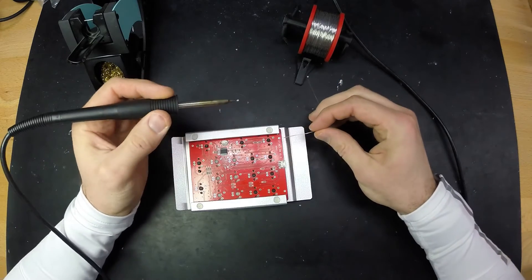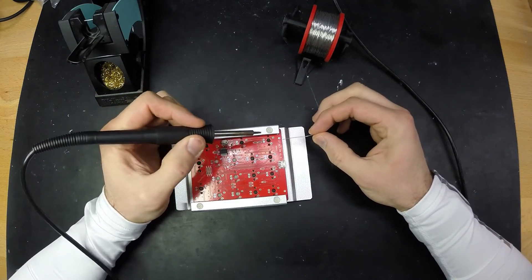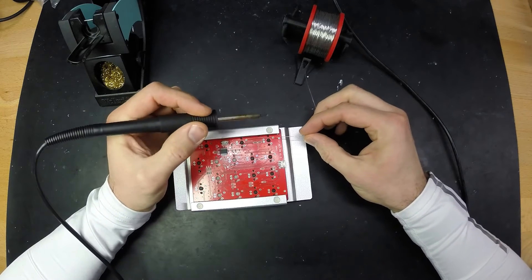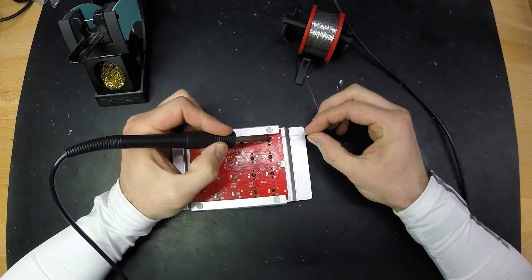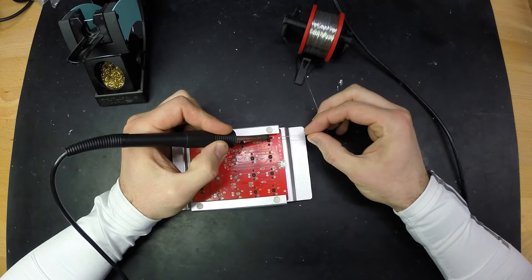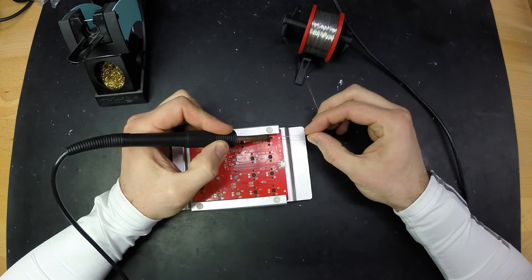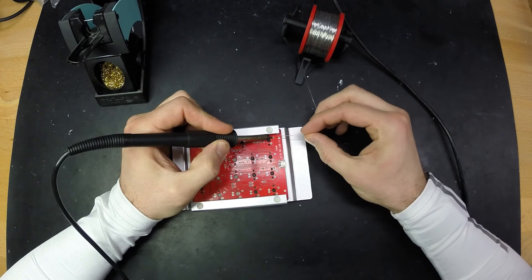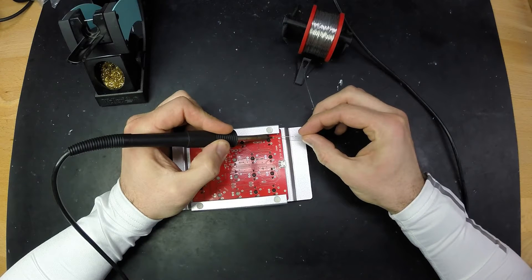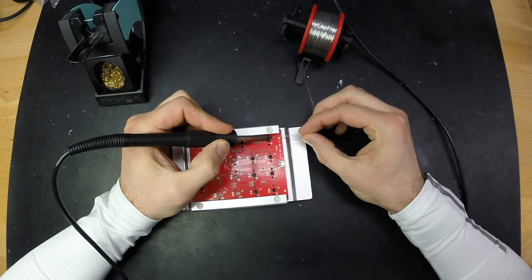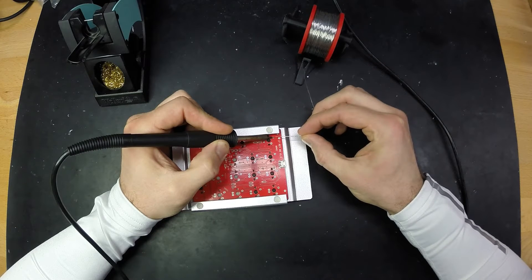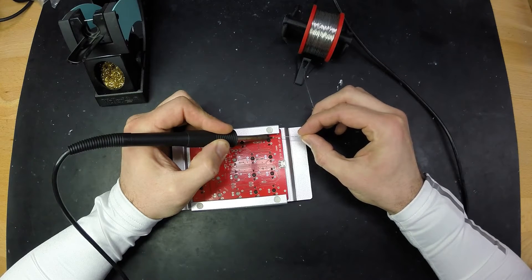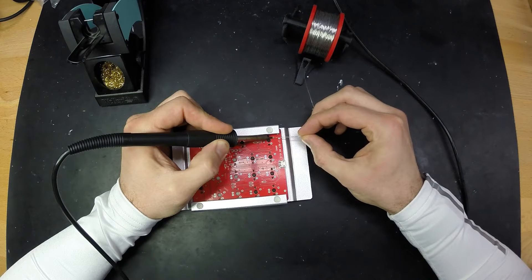So now this is the first pin I'm going to solder. What I'll do is I'll put the tip of my soldering iron on the pad, let it rest there for a second, wait till the pad is hot enough to melt the solder.